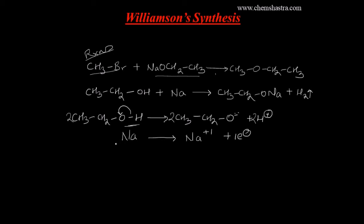When sodium is in zero oxidation state, its electronic configuration is 1s², 2s², 2p⁶, 3s¹. When sodium is converted to Na⁺ in the +1 oxidation state, its configuration becomes 1s², 2s², 2p⁶, which is the same as neon. So Na⁺ is more stable as it achieves the electronic configuration of the nearest noble gas element.